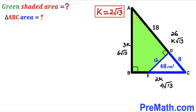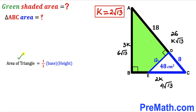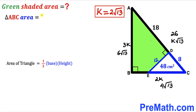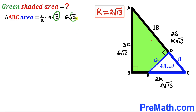Now our task is to calculate the area of this big right triangle ABC. Recalling the area of a triangle formula — one half times base times height — the base is 4 times square root of 13 and the height is 6 times square root of 13. So the area equals one half times 4 root 13 times 6 root 13. Square root of 13 times square root of 13 gives 13, and one half times 4 times 6 times 13 gives us 156 centimeters square.